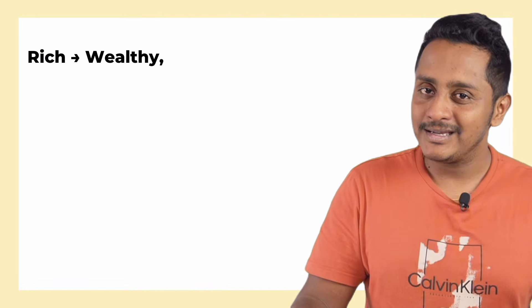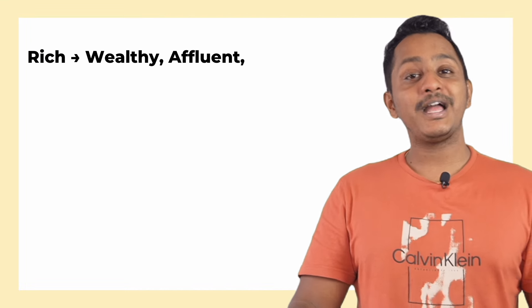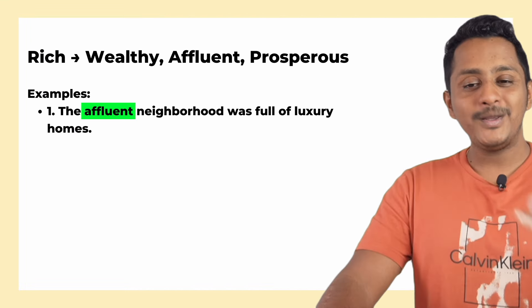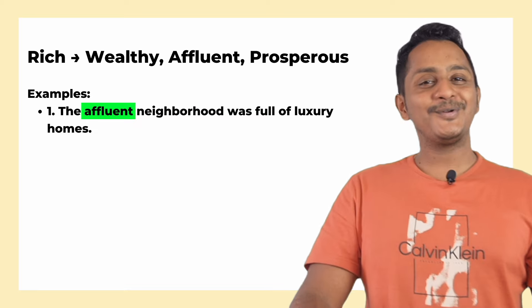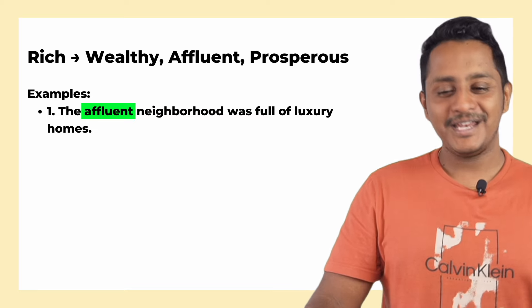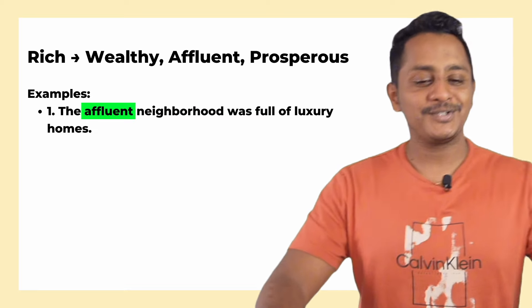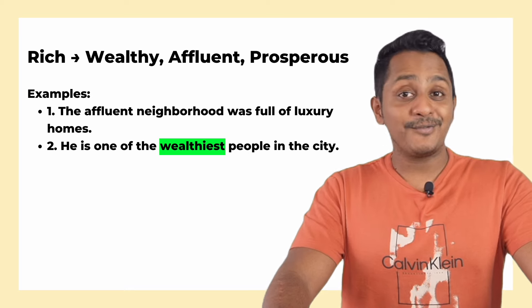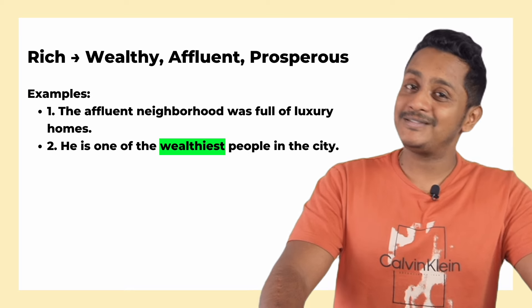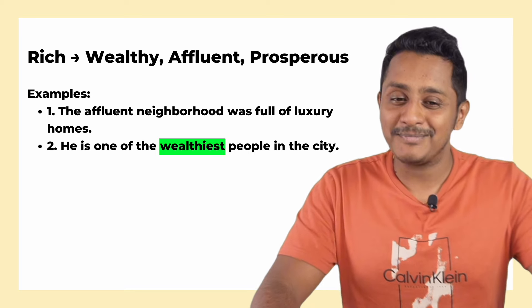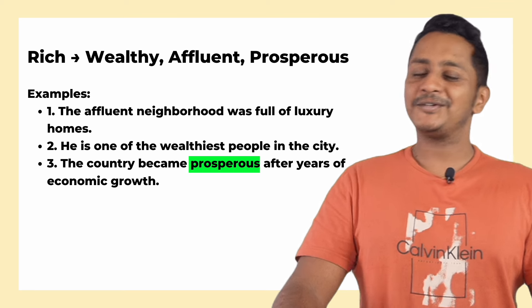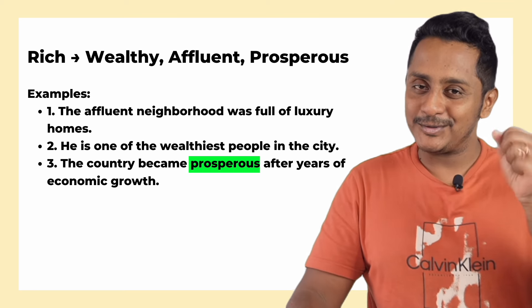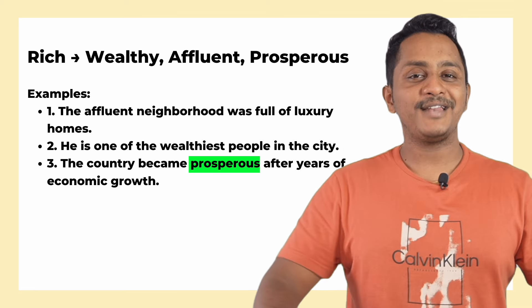The next word is 'rich.' Alternatives are: wealthy, affluent, and prosperous. For example, instead of 'the rich neighborhood,' say 'the affluent neighborhood was full of luxury homes.' Instead of 'he is one of the richest people in the city,' say 'he is one of the wealthiest people in the city.' Instead of 'the country became so rich,' say 'the country became prosperous after years of economic growth.'